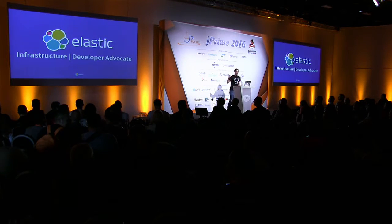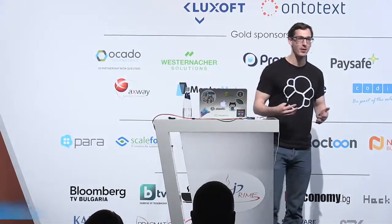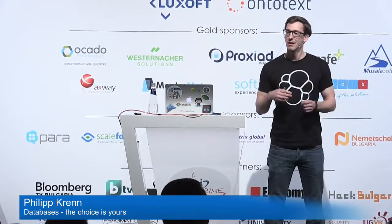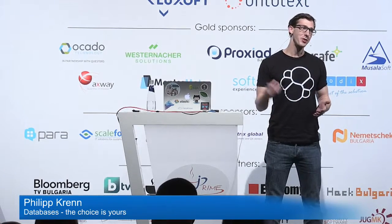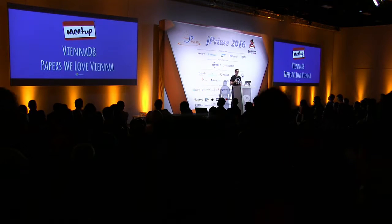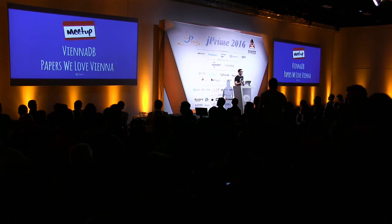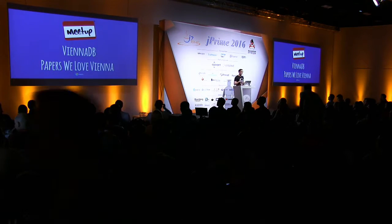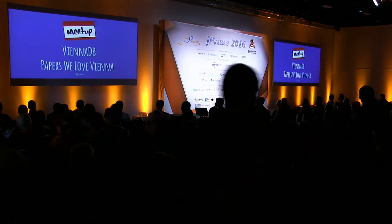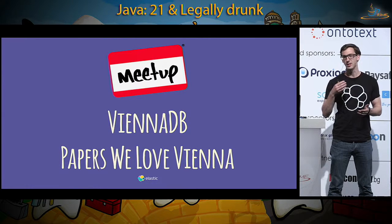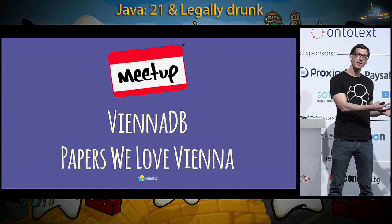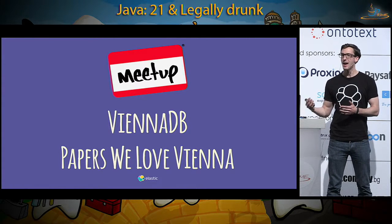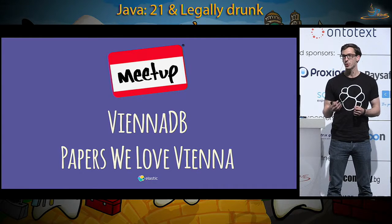I work at Elastic, on the infrastructure team, helping my colleagues with Jenkins, Docker, Amazon, whatever they need. When I'm not doing that, I'm out doing conference talks — pretty much all over Europe at the moment. Back in Vienna, I run two meetups: one about databases in general — relational, NoSQL, everything — and one about academic papers. This talk is the combination of those two hobbies: the theory behind databases and some practical examples of what you can do with databases today.